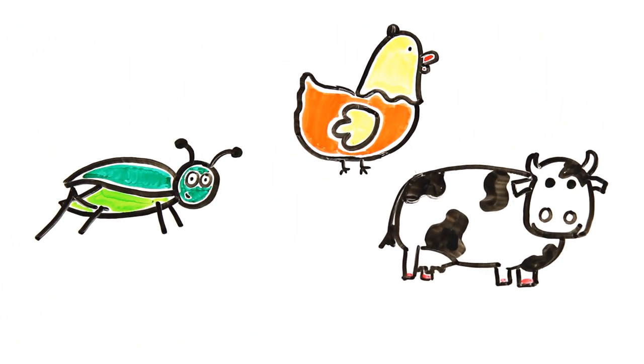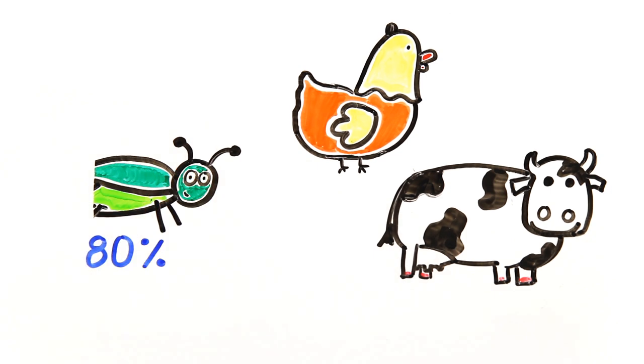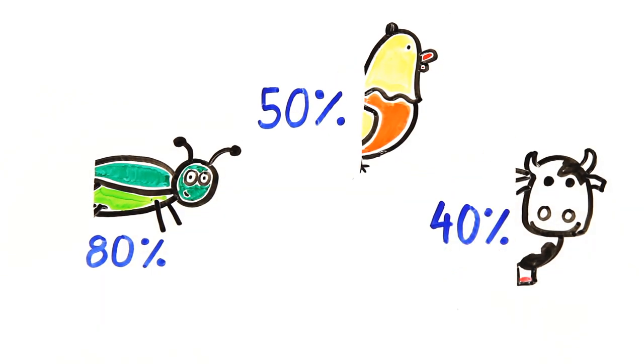They're also more digestible. In fact, 80% of a cricket is edible and digestible compared to 50% of a chicken and 40% of cattle.